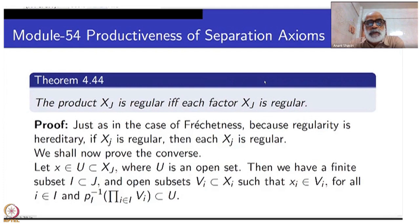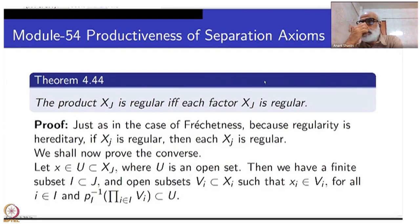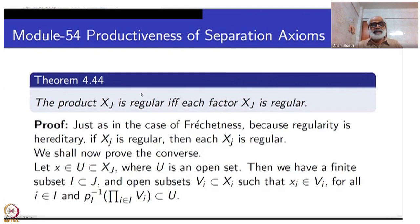We shall now prove the converse. Pick x belonging to U, where U is open in X_J. We must produce another open subset whose closure is contained inside U, with this open subset containing x — so between x and U we must squeeze another open set.